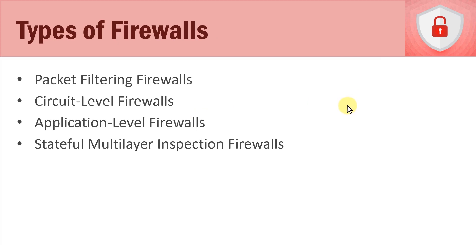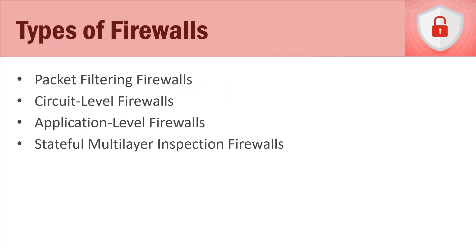Now let's talk about the four different types of hardware firewalls. The first generation and most simple type is packet filtering, then there is circuit level filtering, application level filtering, and finally stateful multi-layer inspection filtering firewalls. We're going to talk about each one separately.